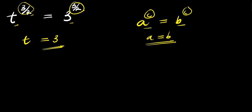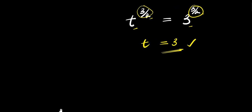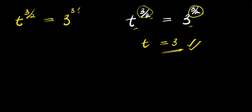Now, this is just one of the solutions — we have other solutions here. So in this video, I'm going to show you how to solve this step by step and find all the values of t that will satisfy this equation. We have t to the power of 3 over 2, and this equals 3 to the power of 3 over 2.